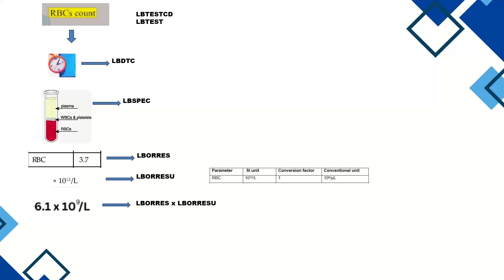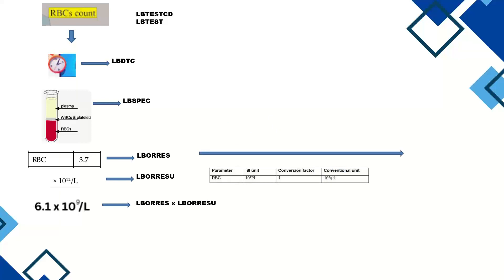After conversion using the conversion factor, the standardized character result is mapped to LBSTRESC (standard result character version) and the numeric version is mapped to LBSTRESN. The SI units after conversion are mapped to LBSTRESU. After conversion, both subjects will have the same unit — for example 10^12/L — with 6.1 converted from 10^9 to 10^12 accordingly.